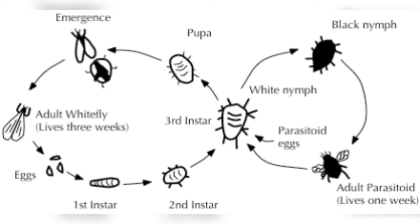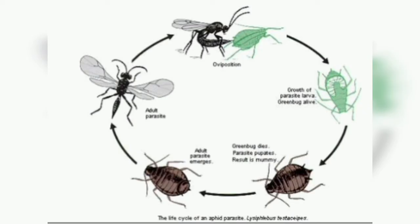Natural enemies of insects play an important role in limiting the densities of potential pests. These natural enemies include predators, parasitoids, and pathogens. Pests are those species that attack some resource that human beings want to protect, successfully enough to become either economically important or just a major annoyance. They are only a tiny fraction of the insect species around us.